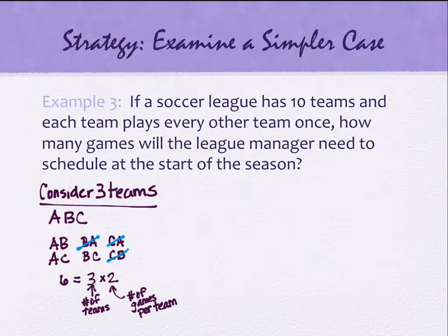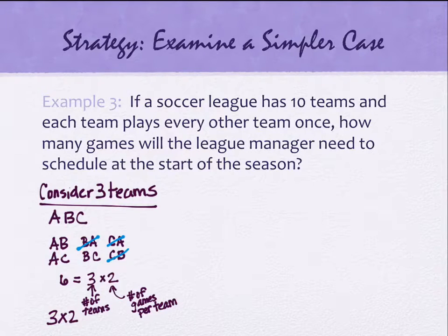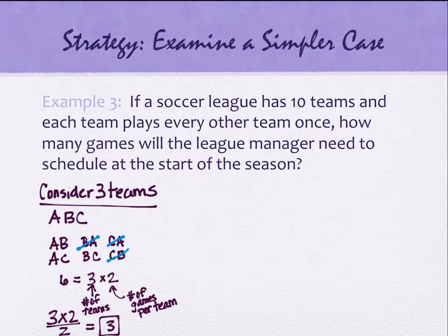We shouldn't have written them all out because that double counted everything. So to remove the double counts, we divide by two. It's really half of what I originally said. So three times two, divided by two, gives us three games. But it's the process I care about more than the answer, because this didn't yet answer my original question about ten teams. Now that I've established the process, I should be able to replicate it for ten teams.